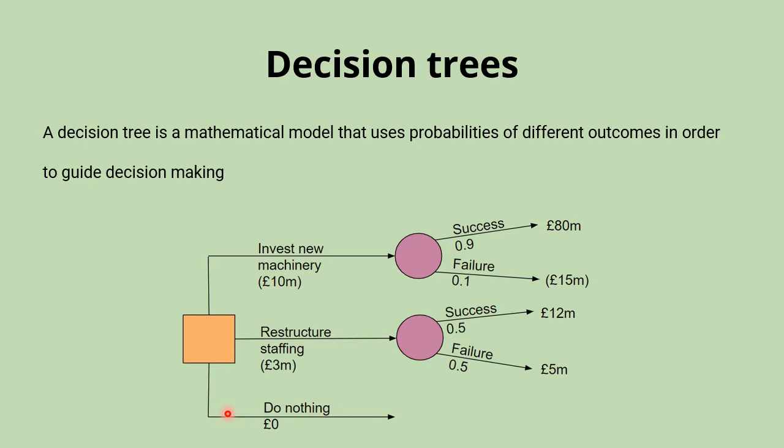For each option, we have the possible outcomes. There's the possibility of success and failure with each assigned a probability. You might have more than two possible outcomes, but all of the probabilities have to add up to one. Then we have the return that each outcome is expected to generate at the end here.